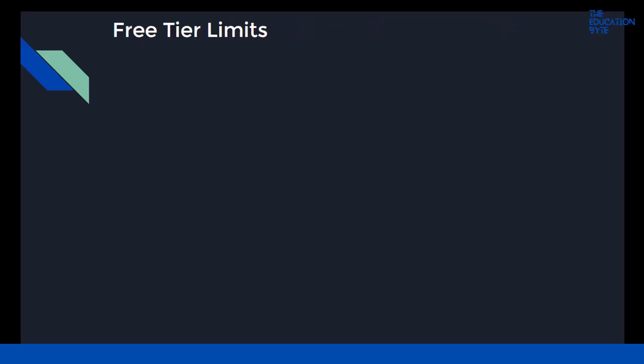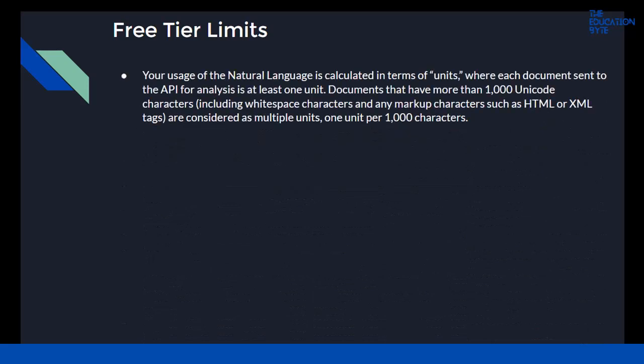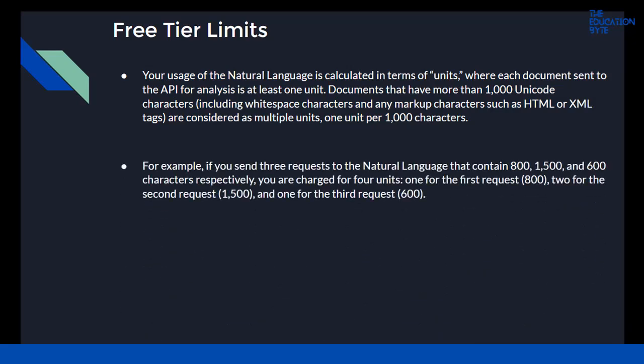Your usage of the Natural Language API is calculated in terms of units, where each document sent to the API for analysis is at least one unit. Documents that are more than 1000 Unicode characters — including white space and markup characters such as HTML or XML tags — are considered multiple units, that is one unit per 1000 characters. For example, if you send three requests containing 850, 1500, and 600 characters respectively, you are charged for four units: one for the first request at 850, two for the second at 1500, and one for the third at 600.